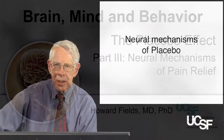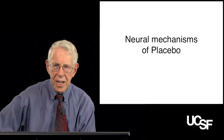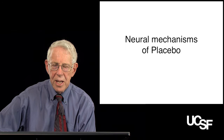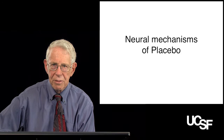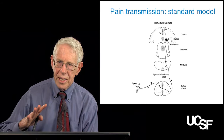In the previous section, we discussed the two major psychological mechanisms that underlie expectation of pain relief. In this section, we're going to talk about how that expectation is translated into a neural mechanism underlying pain relief. The critical thing to understand in trying to get at this neural mechanism is pain modulation.